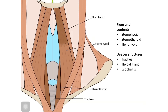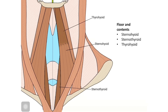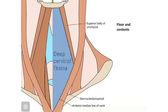That's it about the anterior triangle. If you haven't watched the introduction to triangles and posterior triangle video, you can go back and click the link. In both videos you will have come across the deep cervical fascia, which forms the roof of both the anterior and posterior triangles. A detailed video on the deep cervical fascia — its parts and how to trace it — will be uploaded in the next part. Thank you and have a great day.